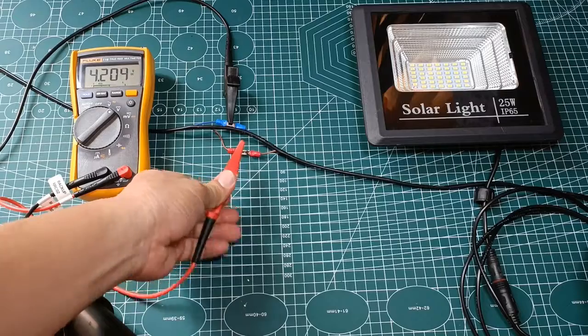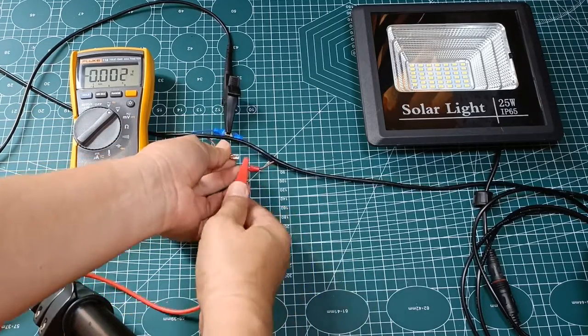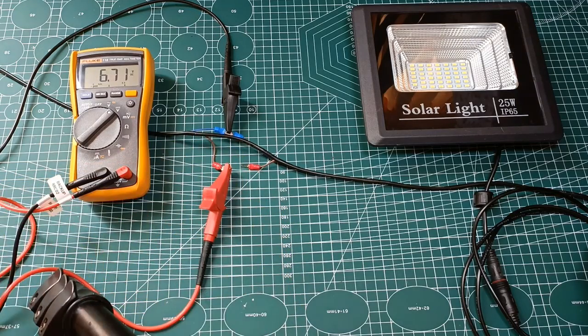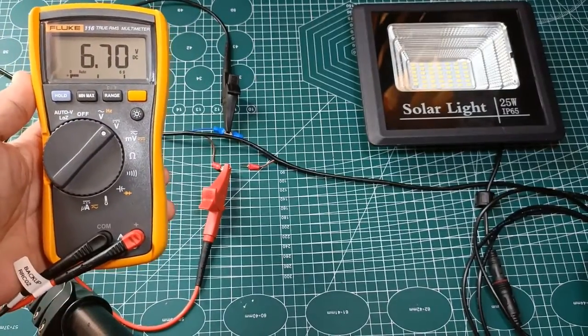Next I will disconnect the positive line and connect the Hioki DT4261 in series with the positive line to measure the charging current, while at the same time still measuring also the charging voltage.